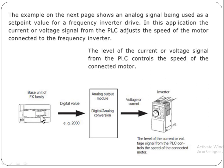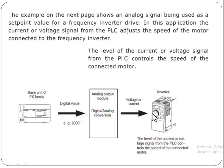The PLC base unit generates a digital signal — for example, a value of 2000. This signal is then converted from digital to analog. The analog signal will be in the form of voltage or current: if voltage, it will be in the range of 0 to 10V; if current, it will be in the range of 0 to 20mA. This signal is then transferred to the inverter, which controls the speed of the connected motor.